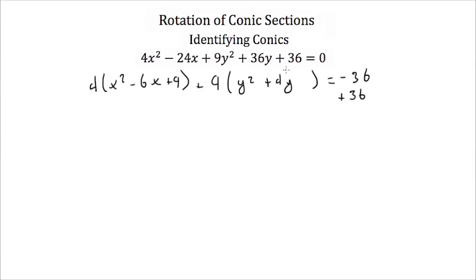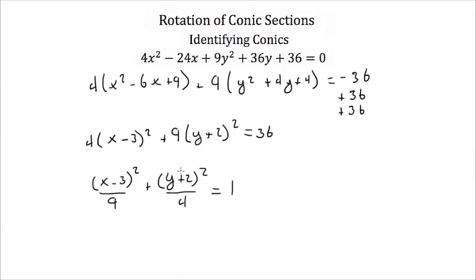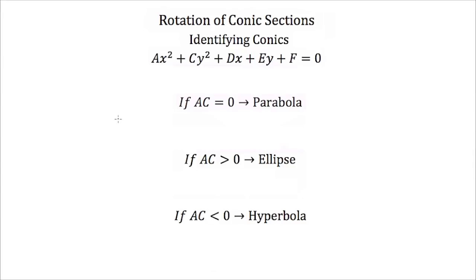Then I look at the y's — I have y squared plus 4y inside the parentheses. I would have to add 4 to make this a perfect square, but if I'm adding 4 inside, I'm really adding 4 times 9, which is 36 again. So I'm adding 36 to the left-hand side, and I have to add 36 to the right-hand side. Now that I've completed the square, I can factor these into 4 times (x minus 3) squared plus 9 times (y plus 2) squared, and that's equal to 36. Dividing everything by 36, I get (x minus 3) squared over 9 plus (y plus 2) squared over 4 equals 1. Looking at this equation, this is the equation of an ellipse.